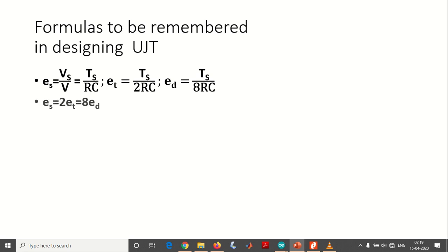Followed by the relationship between the three errors: ES equals 2ET and 8ED. The sweep time equals RC natural log of VYY minus VB by VYY minus VP, the peak voltage which is the minimum voltage required to turn on the UJT.